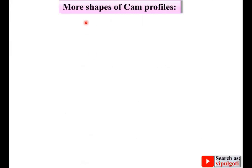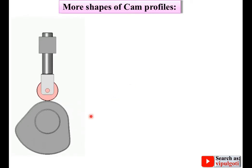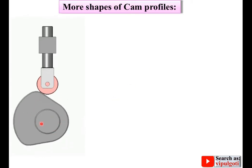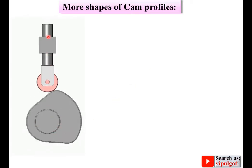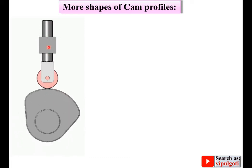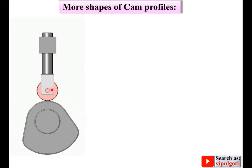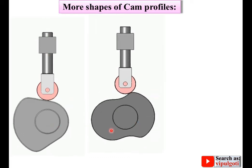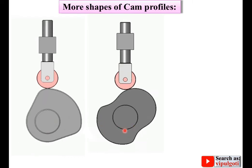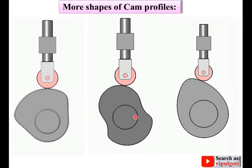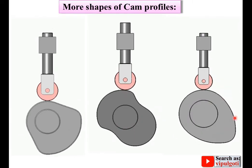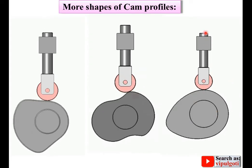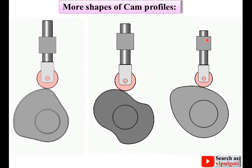Here you can see more shapes of CAM Profiles. The CAM is rotating and so the Follower is reciprocating. The shape of the CAM depends on the type of Follower motion required.